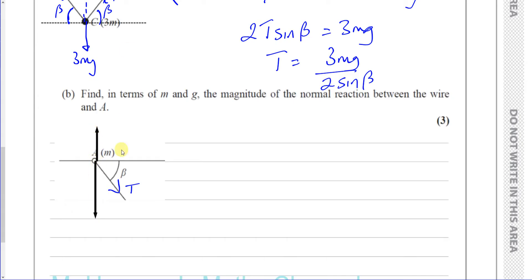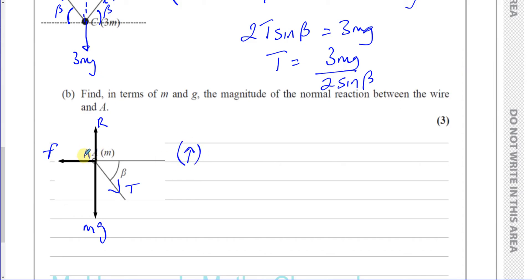Ring A also has a frictional force acting horizontally, but we don't need that for part B. Resolving forces on ring A vertically: R acting upward equals MG plus T sine beta, since the tension's vertical component pulls downward on the ring.